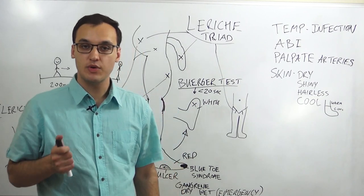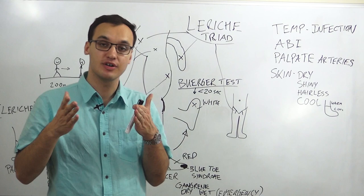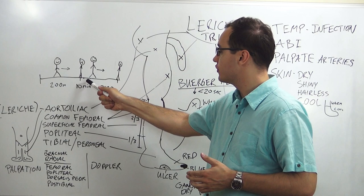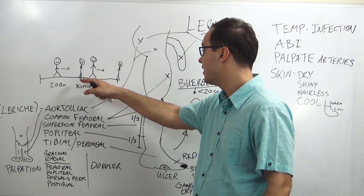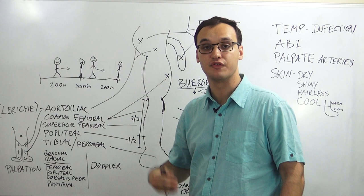Today we are talking about the symptoms of peripheral artery disease. We have a case where a man is walking for 200 meters and then has to stop for 10 minutes because he has severe pain and weakness in his legs. After 200 meters he stops, rests for 10 minutes, then can walk another 200 meters — but has to stop again. This means the patient has intermittent claudication.